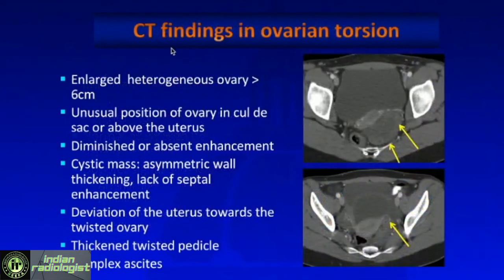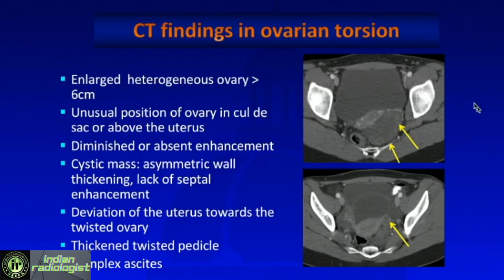To recap the CT findings in ovarian torsion: an enlarged, hypo-enhancing ovary, usually more than 6 centimeters. Think about it if the ovary is in an unusual position — either in the cul-de-sac or above the uterus. If a cystic mass is acting as a fulcrum, you may have asymmetric wall thickening and lack of septal enhancement. You may have deviation of the uterus towards the side of the twisted ovary. You can see the twisted pedicle on CT, and you can have complex focal ascites.